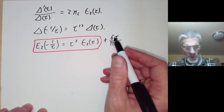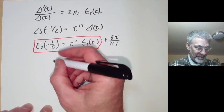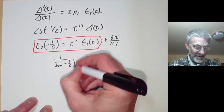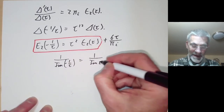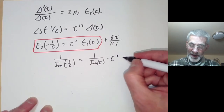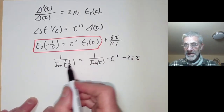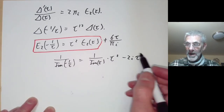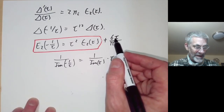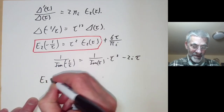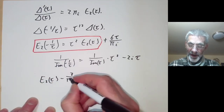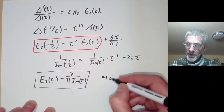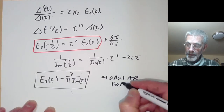We can sort of get rid of this if we notice that 1 over the imaginary part of (−1/τ) equals 1 over Im(τ) times |τ|² minus 2i Re(τ). This means 1/Im(τ) also behaves like a modular form of weight 2. So if you take E2(τ) and subtract 3 over π times Im(τ), this is a modular form of weight 2.